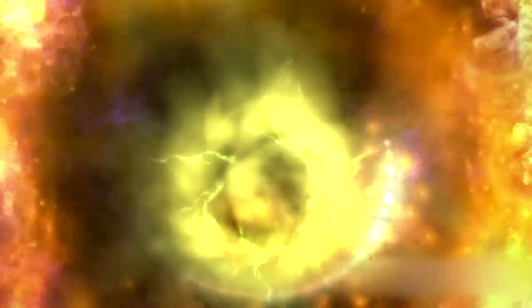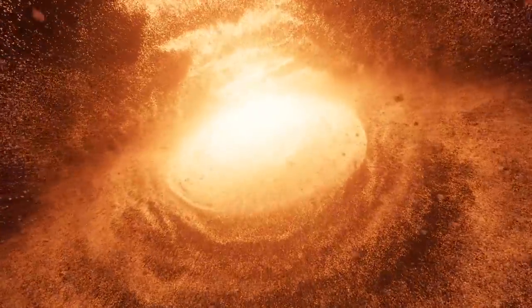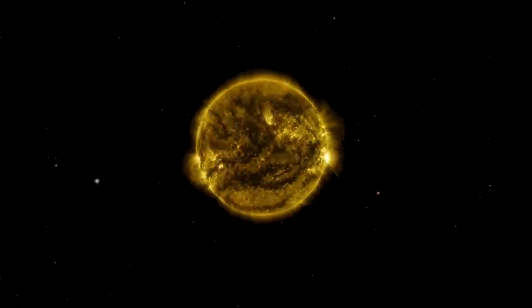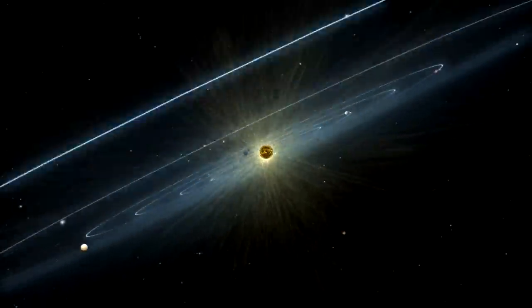If it was generated by supernovae explosions, Zhao Elvis, an astronomer at the University of Vienna, argues that our Sun was far distant from the activity when the initial supernovae that generated the Local Bubble exploded. However, the Sun's journey across the galaxy led it directly into the bubble some 5 million years ago. By chance, the Sun now sits practically exactly in the middle.